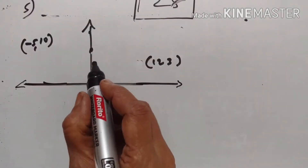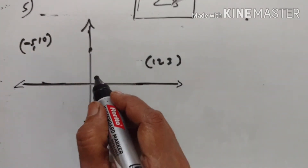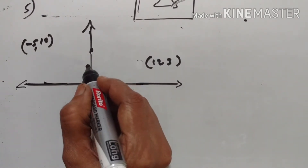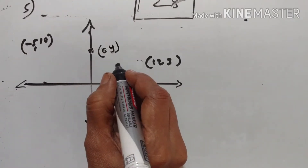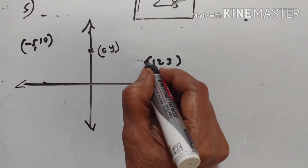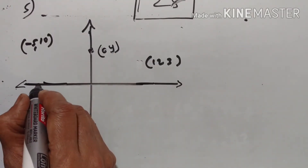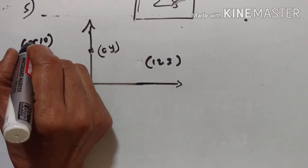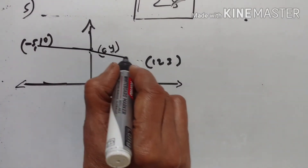Example 5: Which point on the y-axis is equidistant from the points (12, 3) and (-5, 10)? On the y-axis, x = 0, so the point is (0, y). The point (12, 3) is to the right and (-5, 10) means going to the left on the x-axis, at -5 and 10.